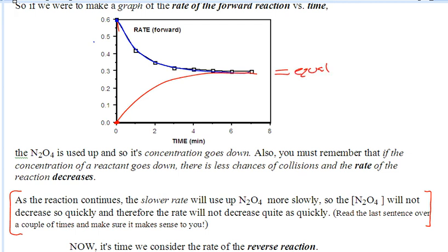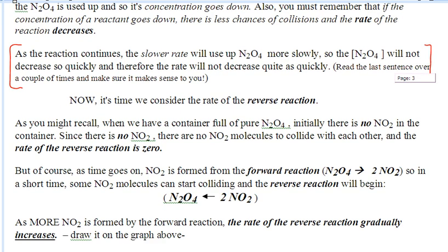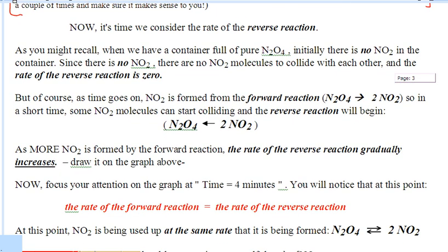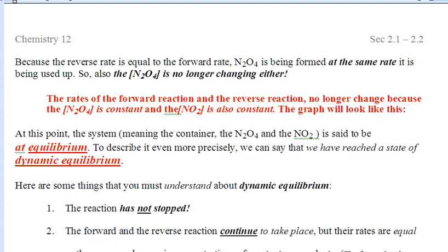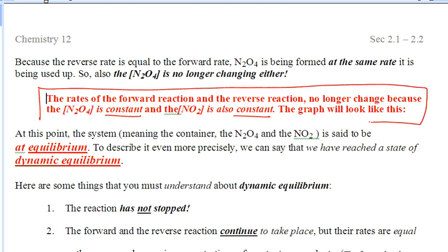Which means you're making products at the exact same time that the products are making reactants. This means that the forward rate equals the reverse rate. If the forward rate and the reverse rate are equal, then the concentration of the products and the concentration of the reactants are now constant. They're not changing. They're being made and consumed at the exact same time, at the exact same rate.